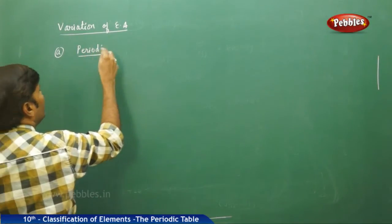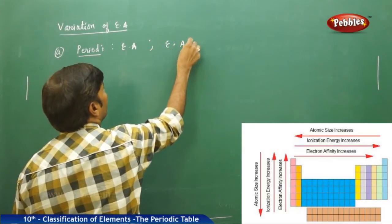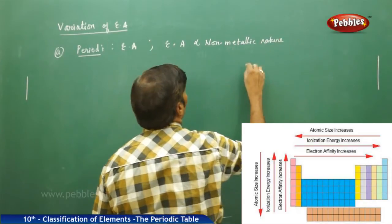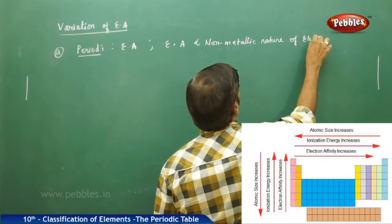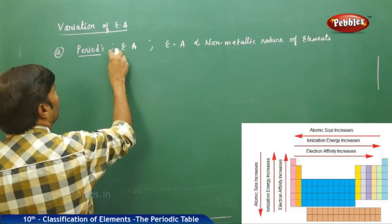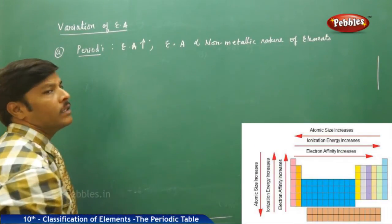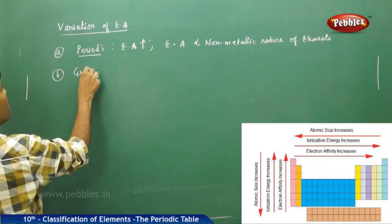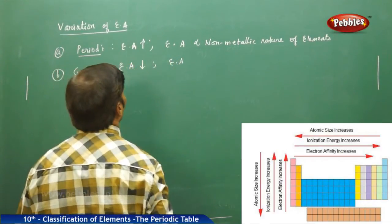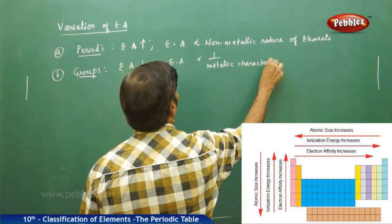In periods, electron affinity increases because electron affinity is always directly proportional to the non-metallic nature of elements. Left to right in a period, electron affinity increases. Similarly, in groups, electron affinity decreases because electron affinity is inversely proportional to metallic character.